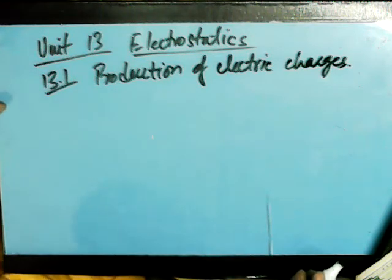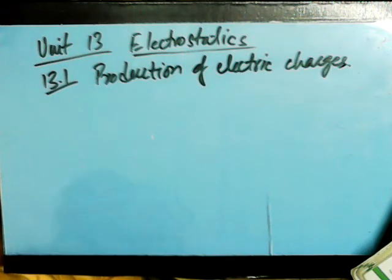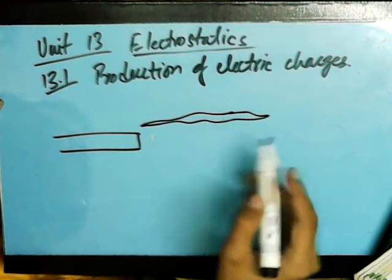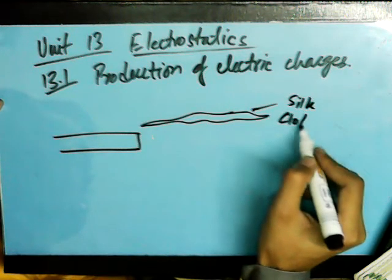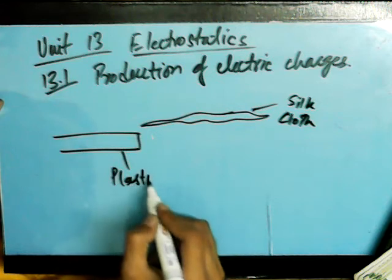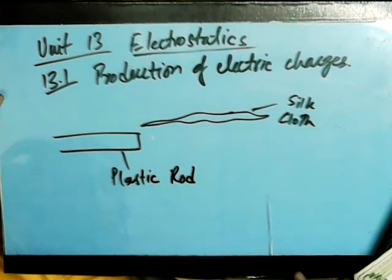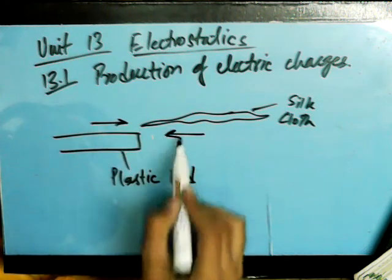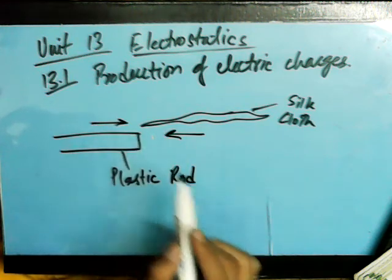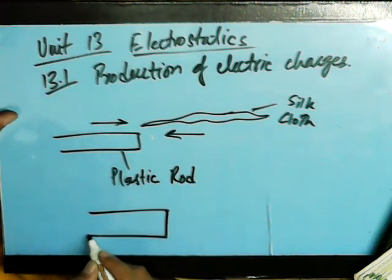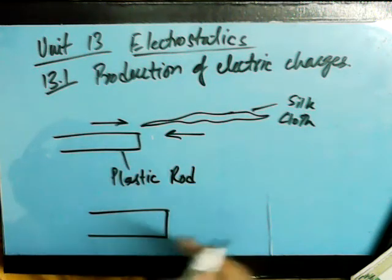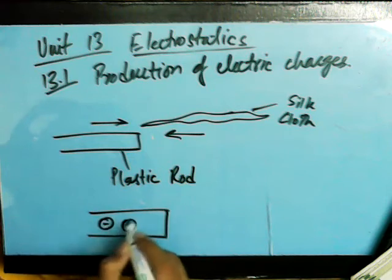Consider a fact that I have a plastic rod and I take a silk cloth. When we take these two together and we rub them, there is going to be friction between them as we are rubbing two surfaces. The rod is going to get positively charged. If this is a glass rod, it would get positively charged. If this is a plastic rod, it is going to get negatively charged.